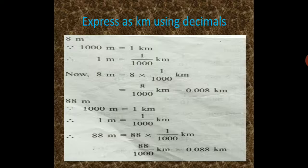What about 88 meter? 1000 meter is equal to 1 kilometer, so 1 meter is equal to 1 by 1000 kilometer. Therefore, 88 meter is equal to 88 into 1 by 1000 kilometer, which is equal to 88 by 1000 kilometer, equal to 0.088 kilometer.